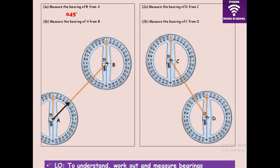Now measure the bearing of A from B. We are now at B — start from north and go all the way around to the direction of A. We measure that full angle, which is 225 degrees. Take note: since north at point B and north at point A are parallel lines, and we measured 045 degrees at A, using alternate angles between parallel lines we can simply add 180 to get 225 degrees.